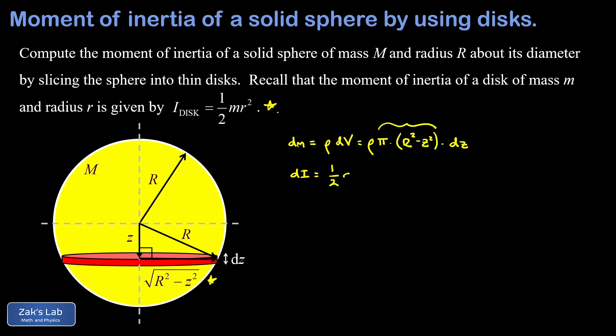So I have one half times the mass of the disk. That's this differential quantity dm times the radius of the disk squared. And again the radius of the disk squared is just r squared minus z squared.